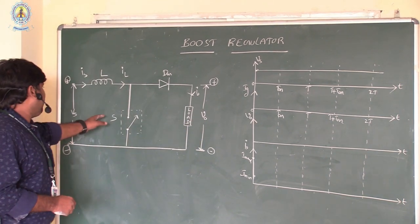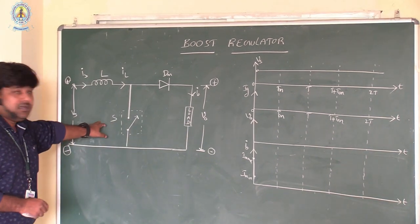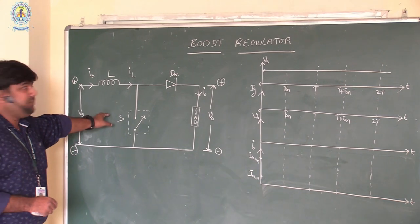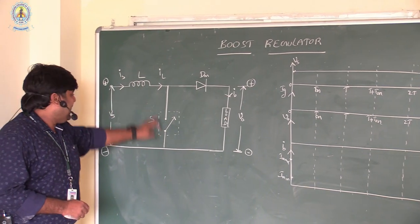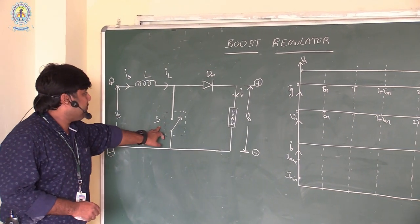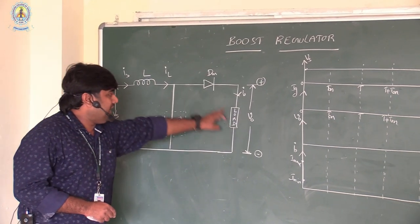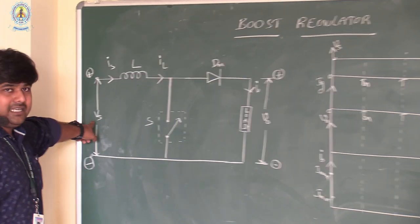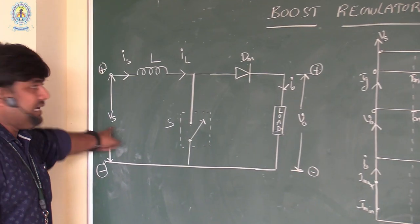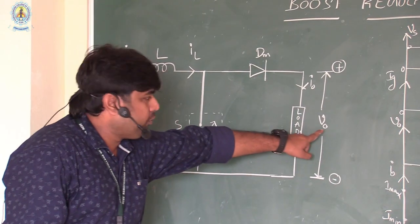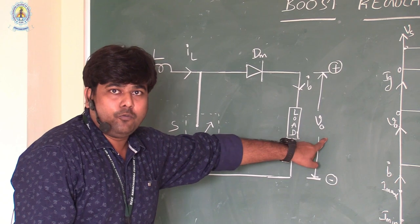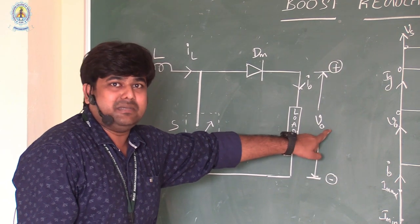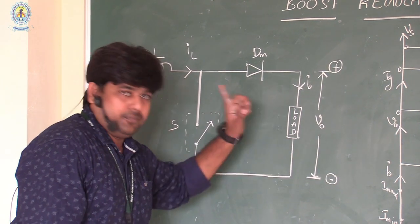This circuit diagram has an inductor, a switch, a diode, and a load. When the input voltage is DC, the output voltage will also be DC. The output voltage is measured across the load.